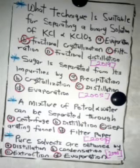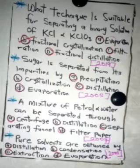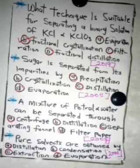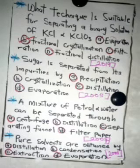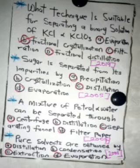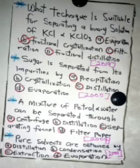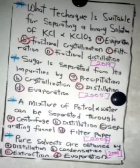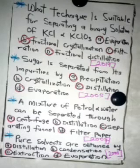The next question: sugar is separated from its impurities by — the answer is crystallization. Crystallization is used to purify sugar, just as it is used for drugs, because you don't want any impurities in these compounds.